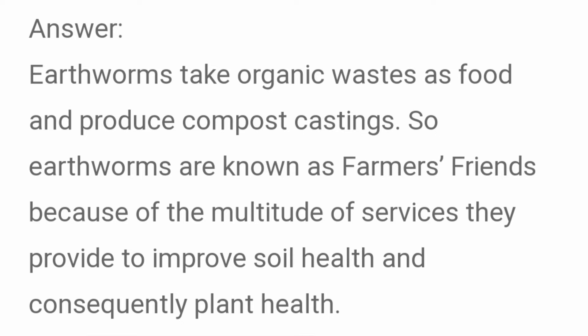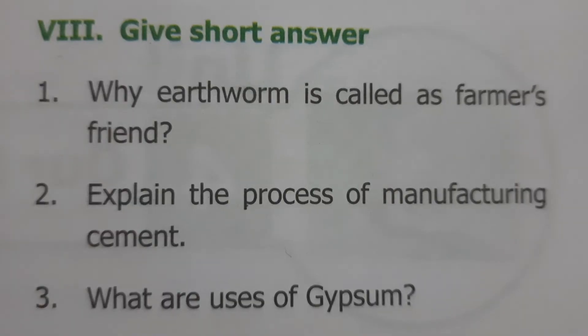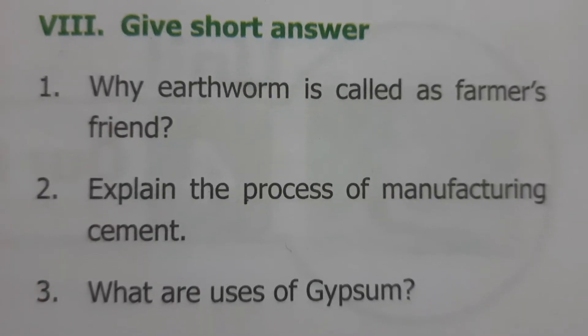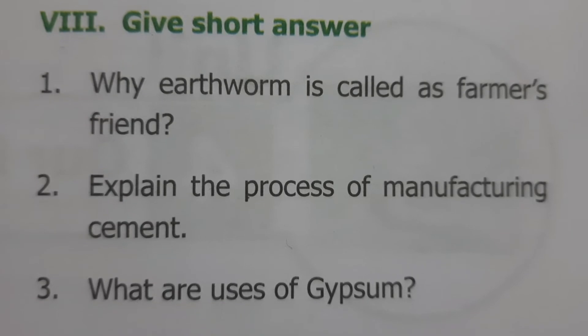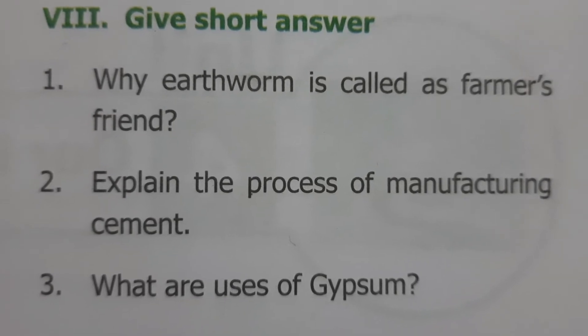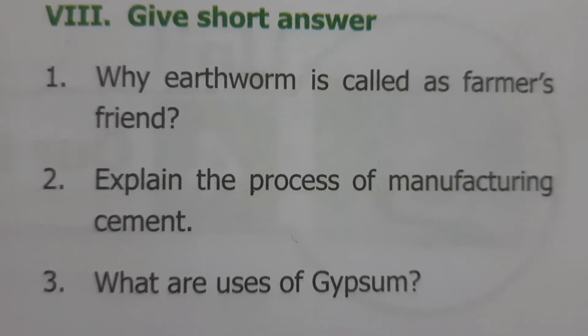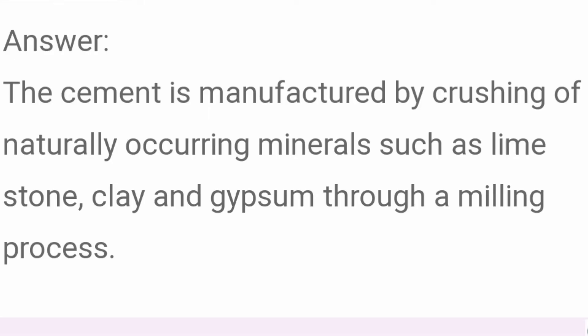Explain the process of manufacturing cement. Cement is manufactured by crushing naturally occurring minerals such as limestone, clay and gypsum through a milling process.